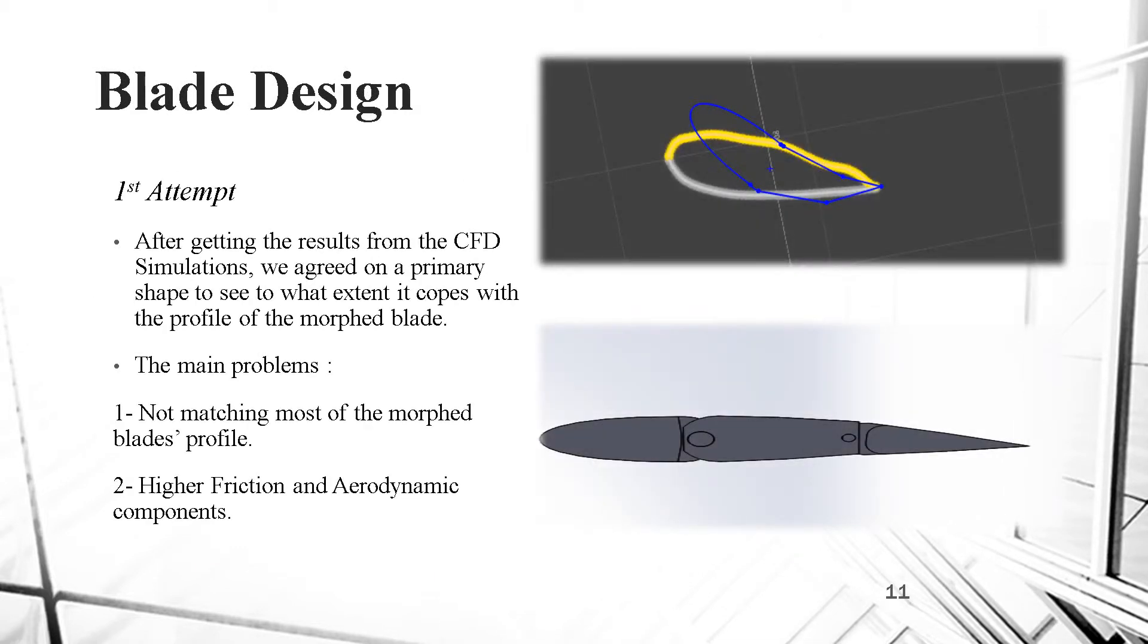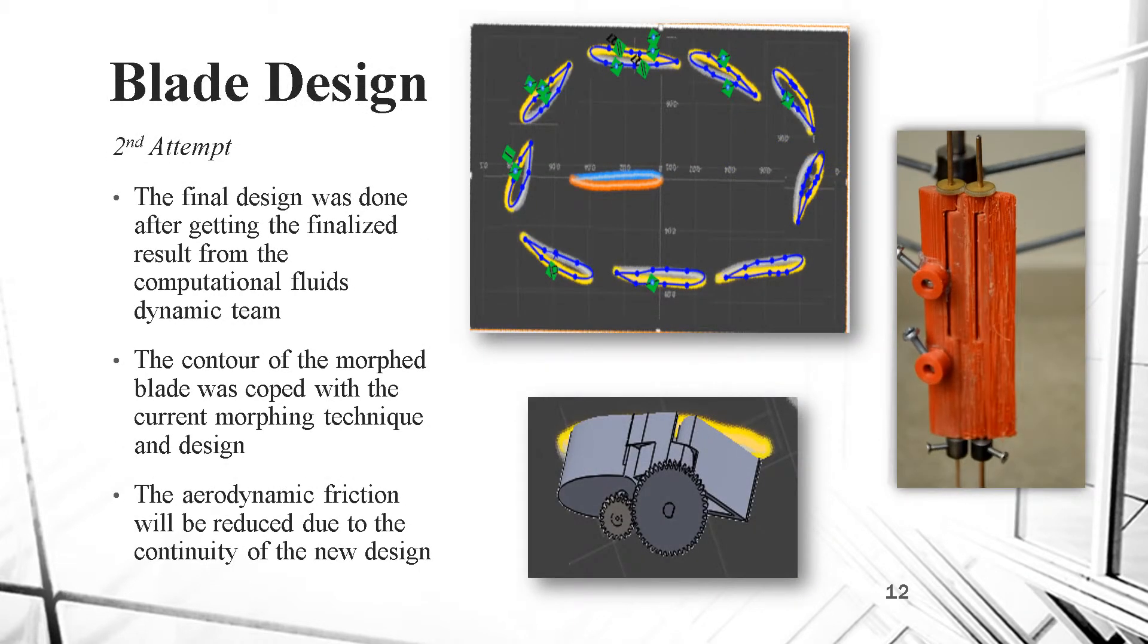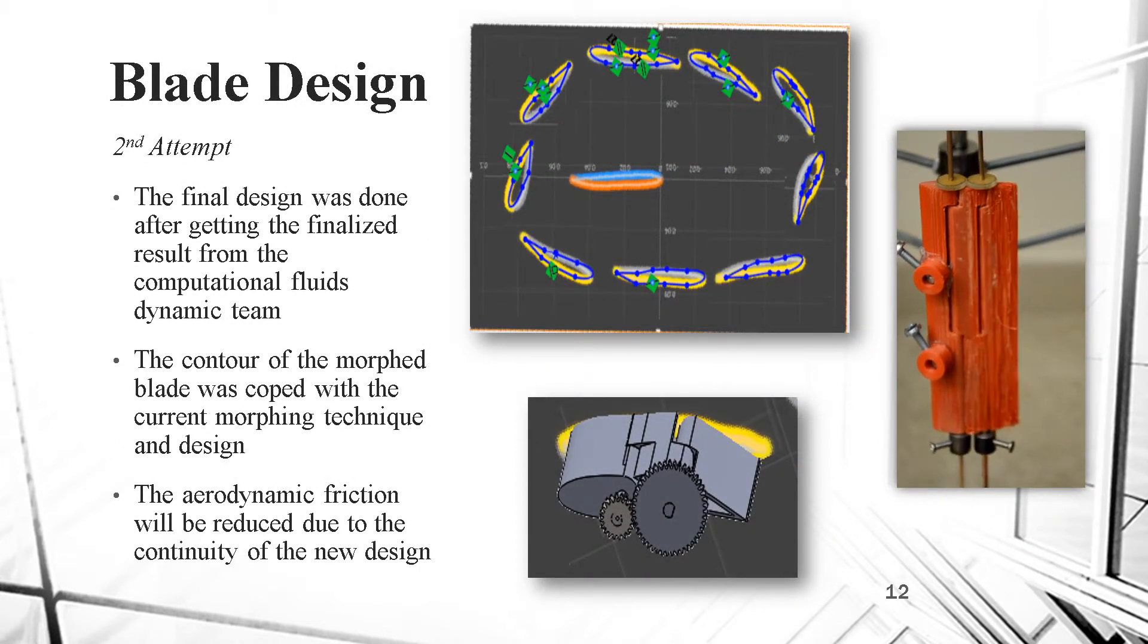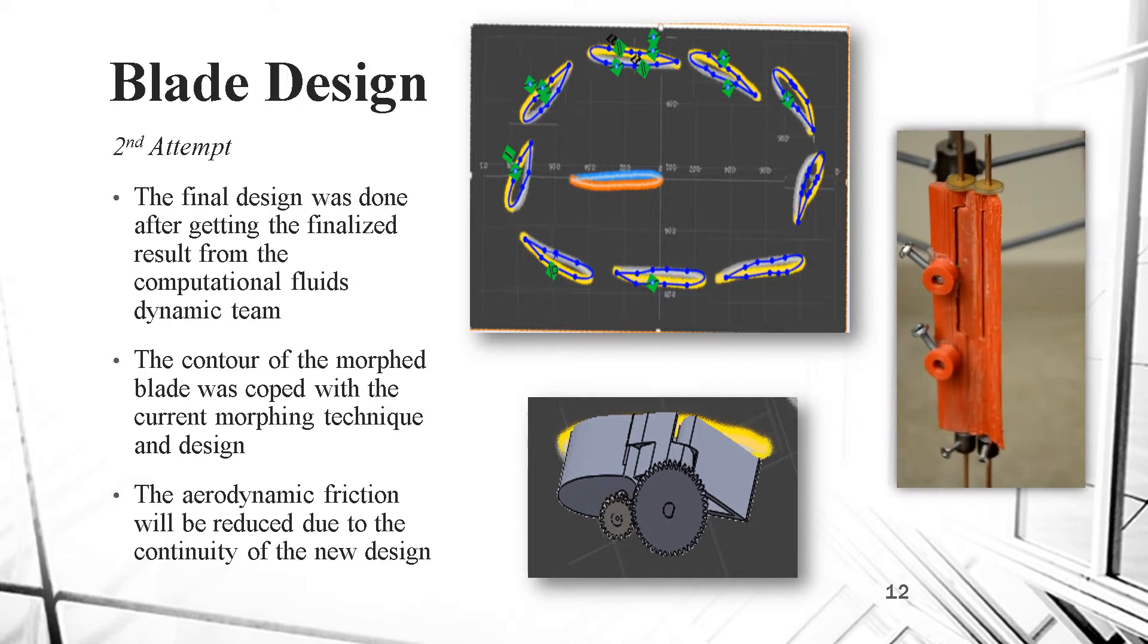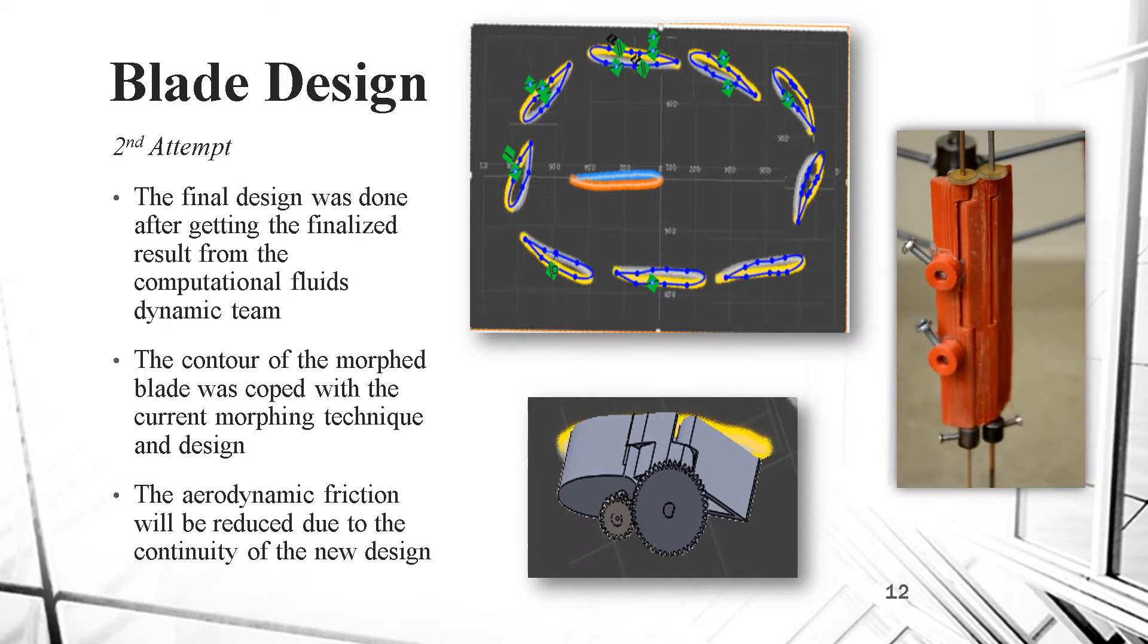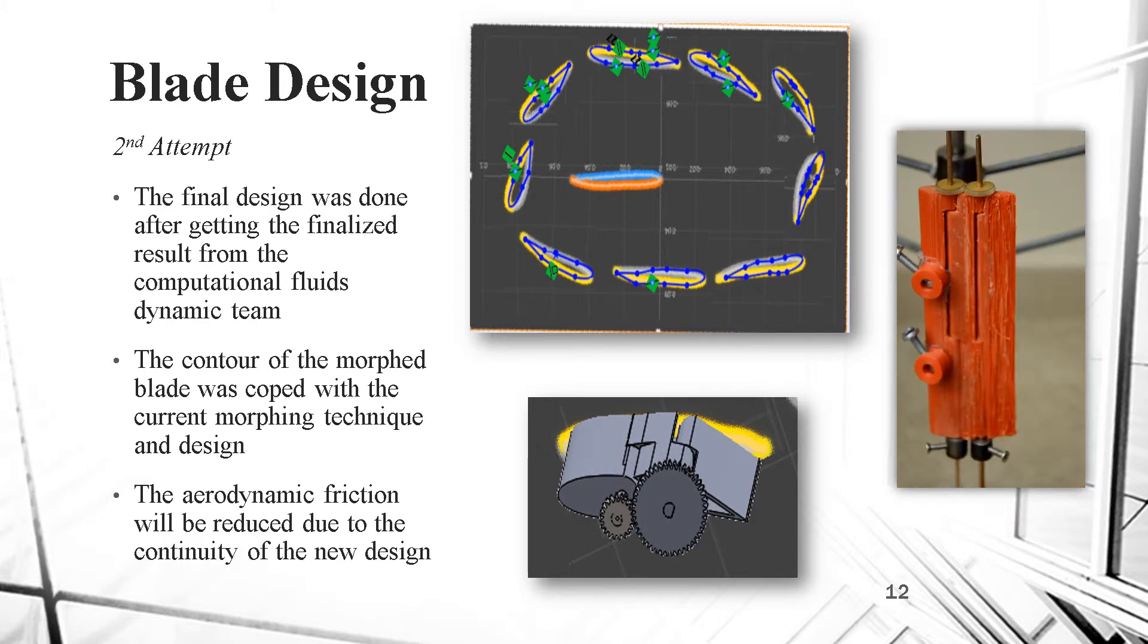The first attempt was, after getting the results from the CFD simulations, we agreed on a primary shape to see to what extent it copes with the profile of the morphed blade. The main problems were not matching most of the morphed blade's profile, and second, higher friction and aerodynamic components.